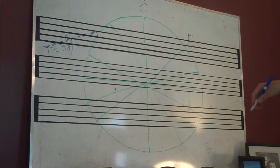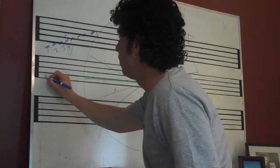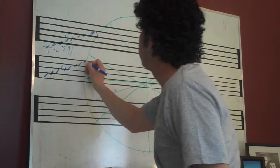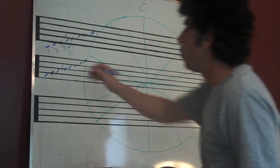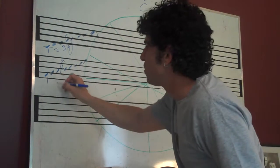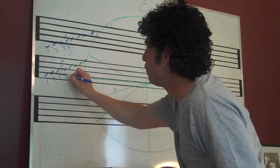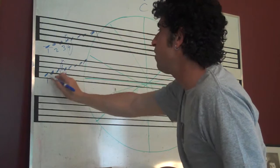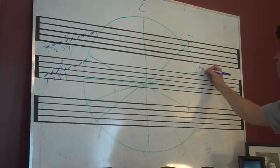If we wrote out F major scale: F, G, A, B flat, C, D, E, and F. How many flats are there? One, B flat. What's the number? One, two, three, four. Our fourth note of F major scale is B flat, right there. So, we're just moving in fourths.